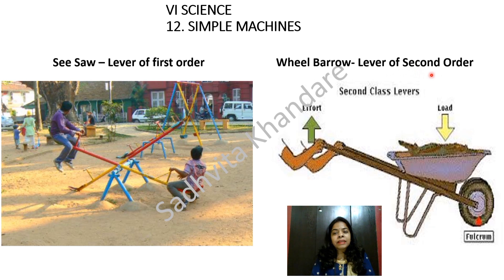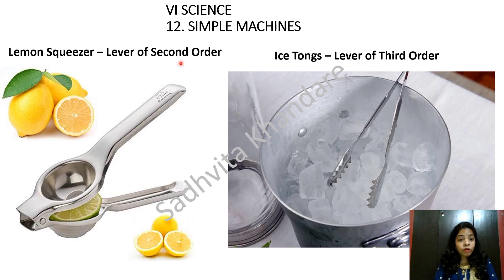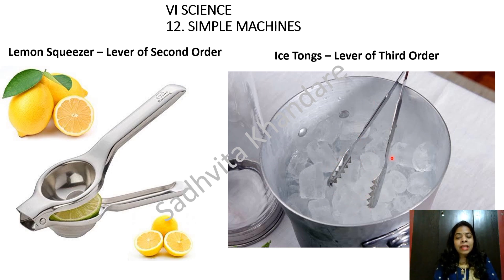The sherbet seller cuts the lemon and squeezes it using a lemon squeezer. A lemon squeezer is also a lever of the second order because the load comes in the middle — FLE, L for second. Here is the fulcrum and here is the effort. He puts small pieces of ice in the glass with the help of tongs. Ice tongs are a lever of the third order because we hold it from the middle — effort is in the middle. FLE, E for effort, third order. Fulcrum on one side and load on the other side, effort in the middle.